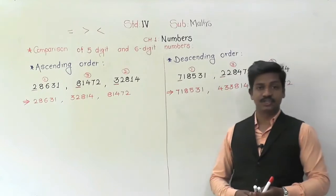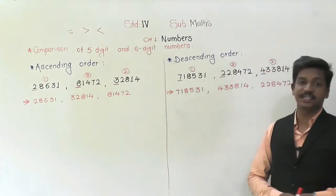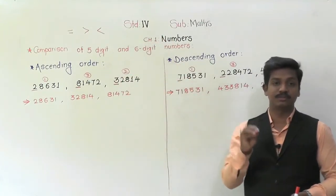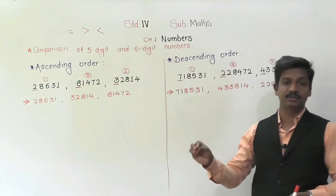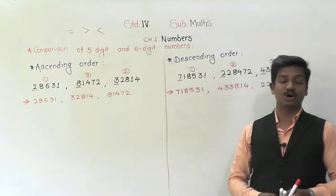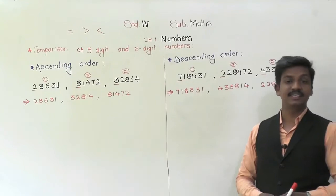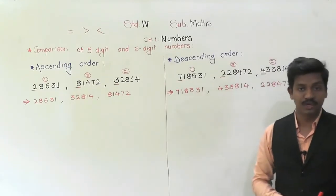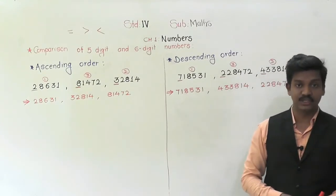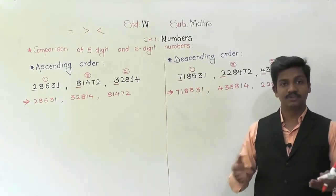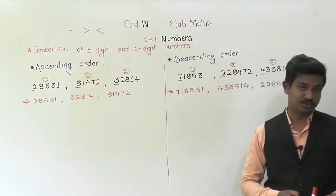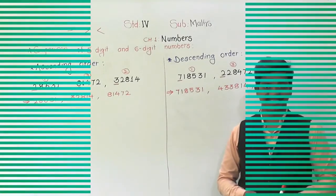In today's lecture, we have learned comparison of five digit and six digit numbers — comparison of numbers with the same number of digits, comparison of numbers with different number of digits, and ascending and descending order of five digit and six digit numbers. Hope you have understood this concept. If you have any doubt, you can reach out in the comment section below or on the WhatsApp group. Thank you and have a nice day.